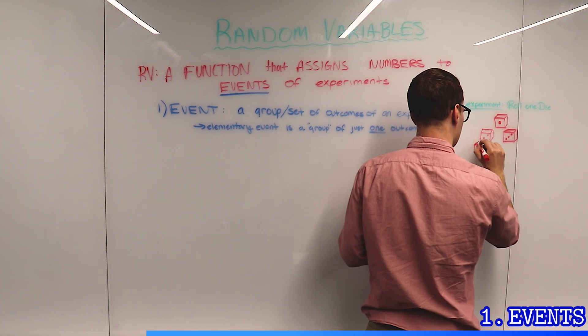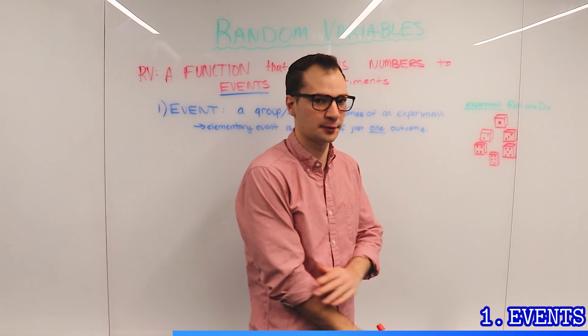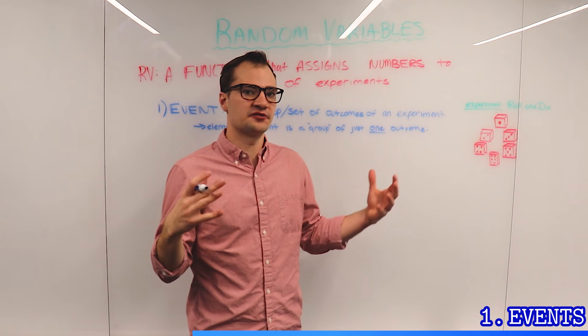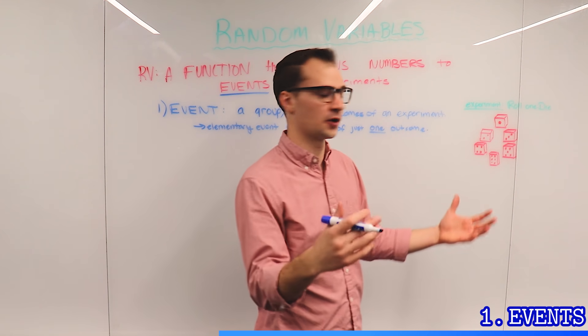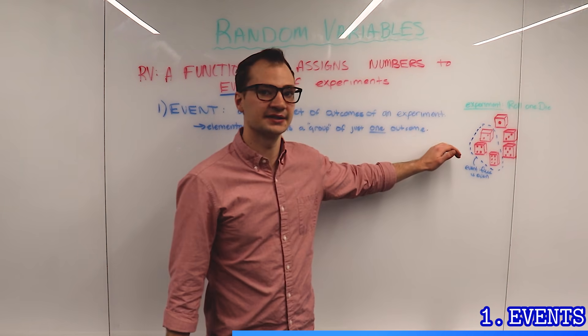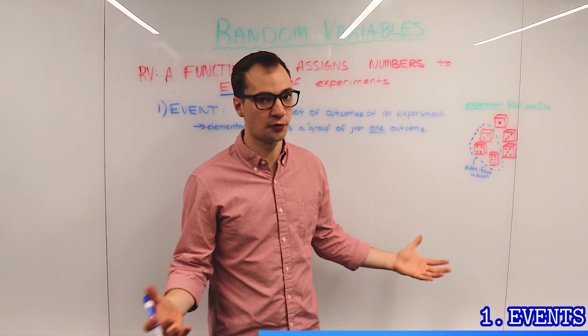So in this experiment, each single die face is an outcome. Now we could define an event as faces that have an even value. So a 2, 4, or a 6. In that case, our event would contain three possible outcomes: a 2, a 4, or a 6.